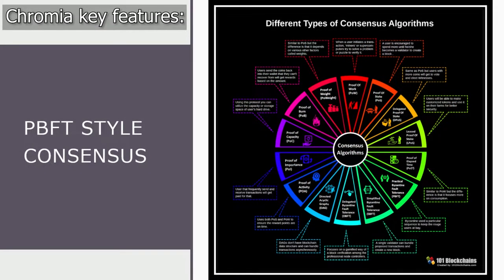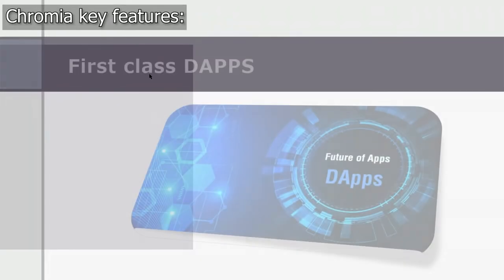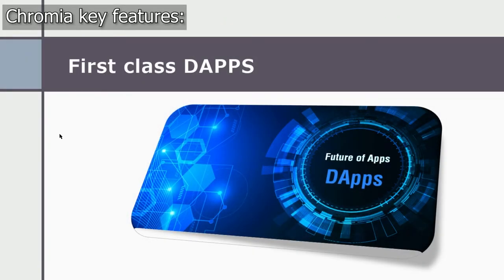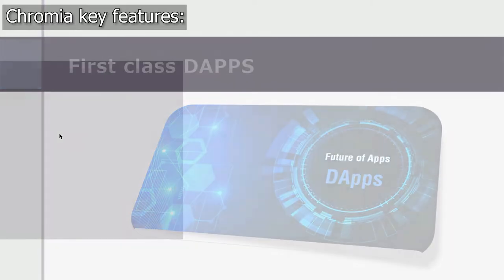Chromia's unique PBFT-style consensus is designed from first principles, and we will surely talk about it a few slides later. There is also a talk about first-class dApps, which means that dApps are considered first-class entities, giving developers tons of flexibility and control — something we'll also discuss later.